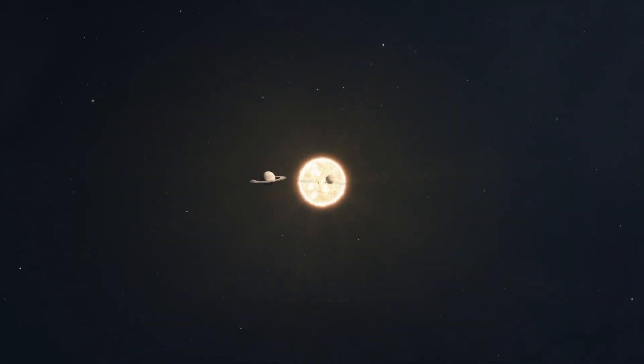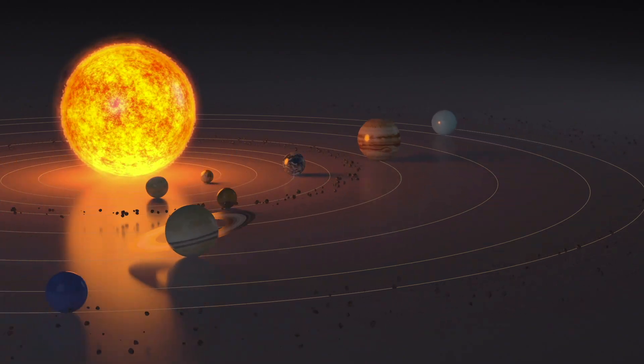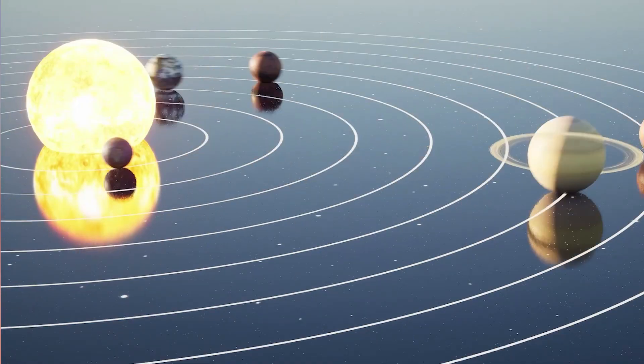Regardless of the outcome, the sun will have reached the end of its life cycle by then, transforming into a red giant and ultimately a white dwarf.